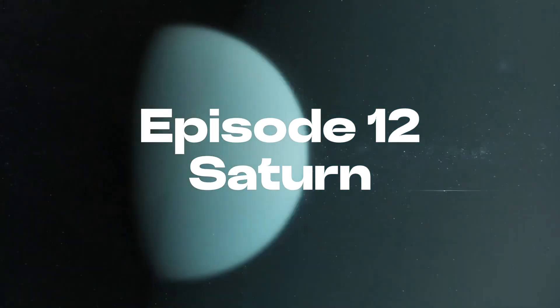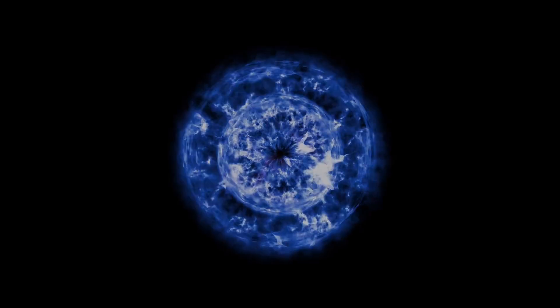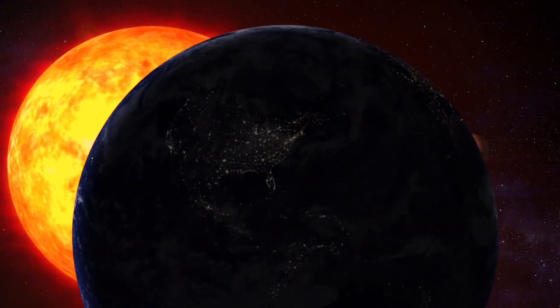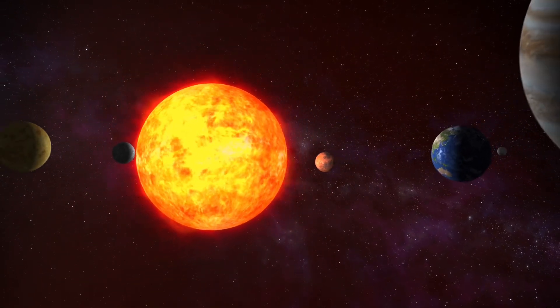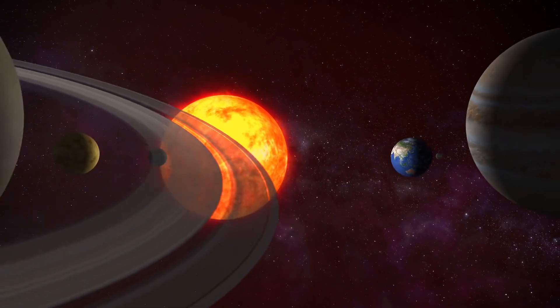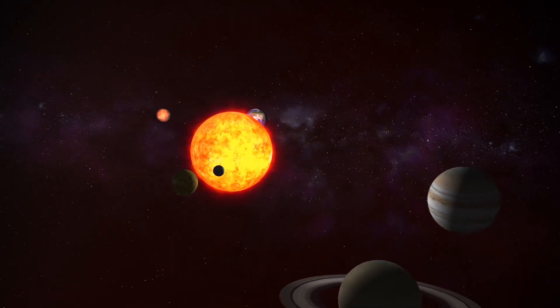Saturn is the sixth planet from the Sun and the second largest in the solar system after Jupiter. It is a gas giant with an average radius about nine times that of Earth. It has an eighth the average density of Earth but is over 95 times more massive.